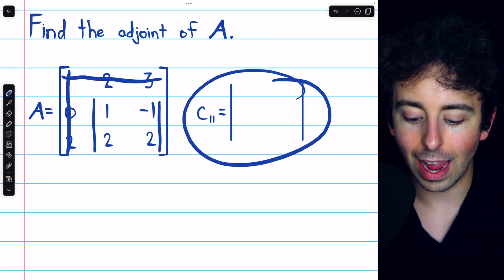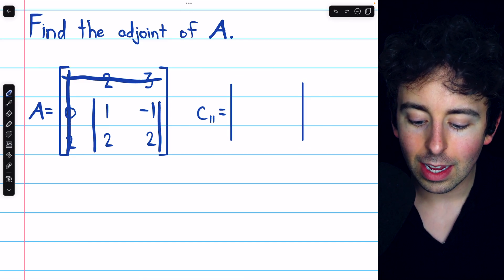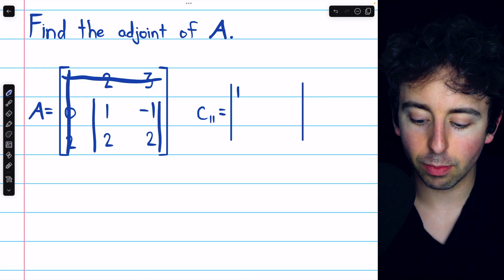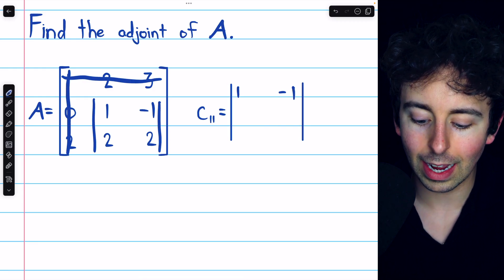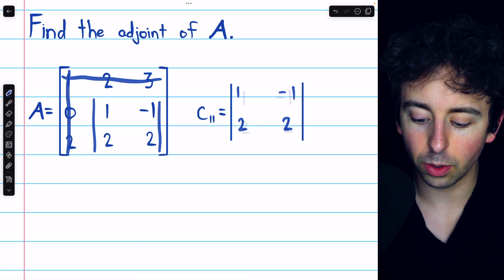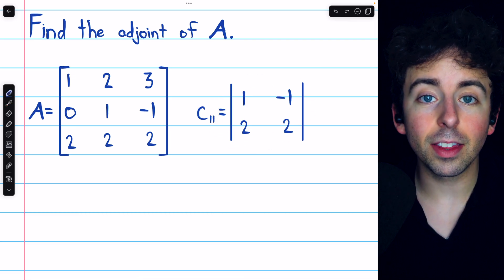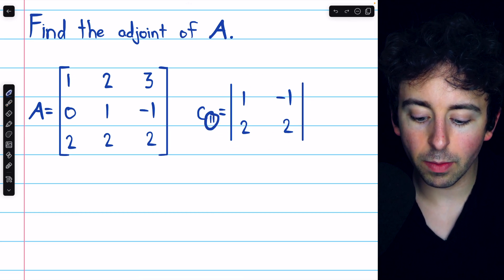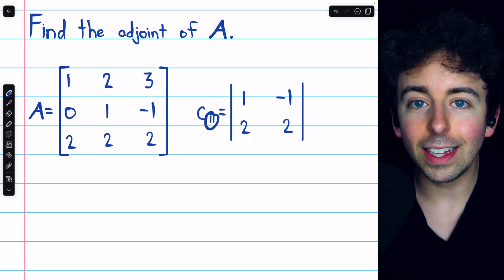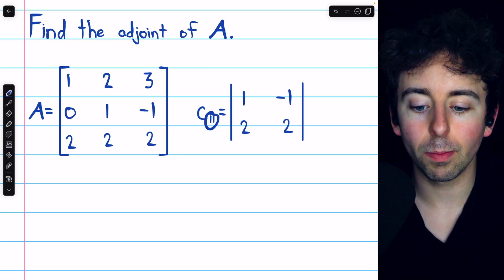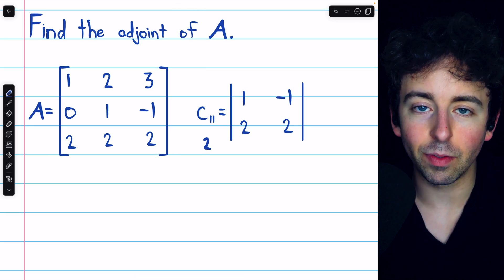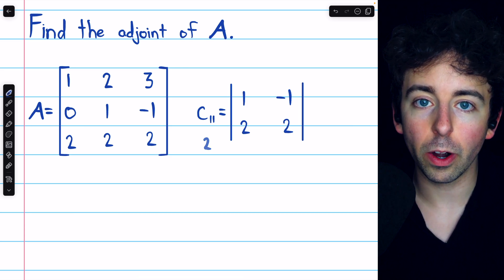So the cofactor for the entry in row 1, column 1 is going to be the determinant of this matrix with the entries 1, negative 1, 2, 2. The only other thing we must consider for the cofactor is the sum of the row and column position of the entry. In this case, that sum is 1 plus 1, which is an even number. Hence, we don't have to do anything more.